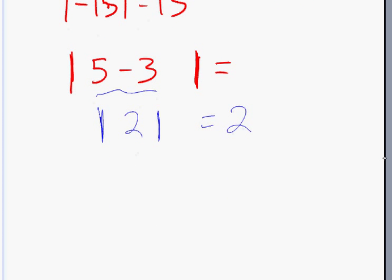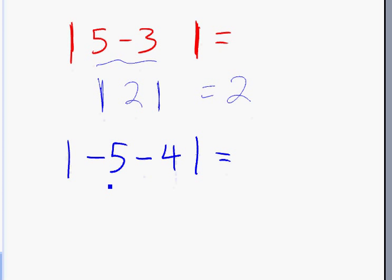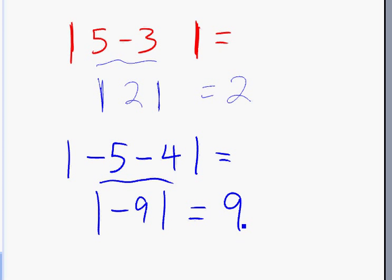What about this one? Absolute value of negative five minus four. Before you do the absolute value, you have to perform the operation inside. Negative five minus four is negative nine, and the absolute value of negative nine is nine.